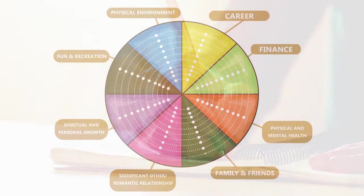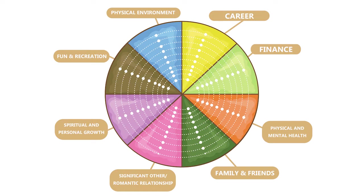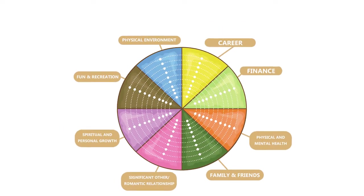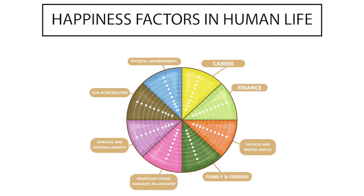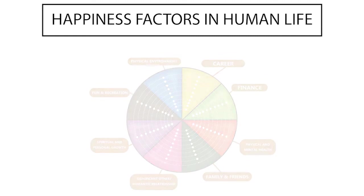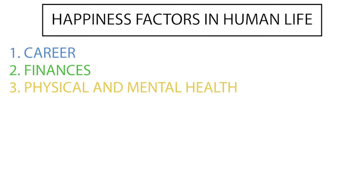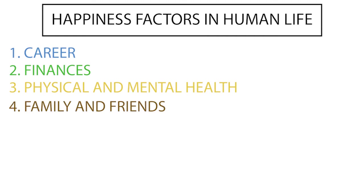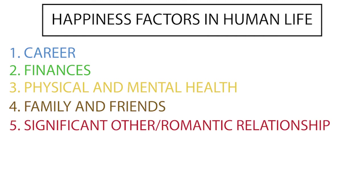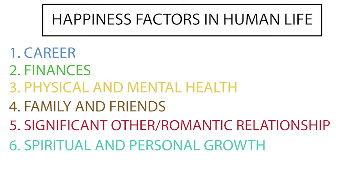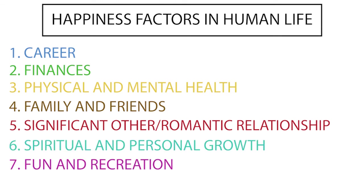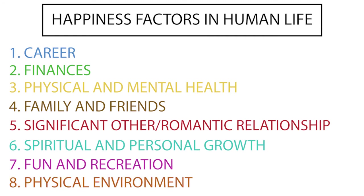The Wheel of Life focuses on eight components, which are also called happiness factors in human life. Most lives involve the following eight components: one, career; two, finances; three, physical and mental health; four, family and friends; five, significant other and romantic relationship; six, spiritual and personal growth; seven, fun and recreation; eight, physical environment.